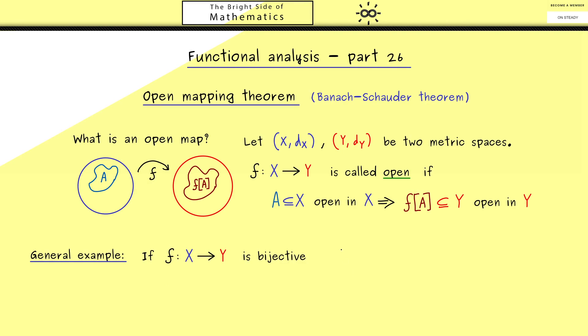So let's fix a bijective map, which means we have an inverse map f to the power minus 1. Of course, this one now goes from Y to X, and we also choose it to be a continuous map. Having these two assumptions, the map f from X to Y is indeed an open map.